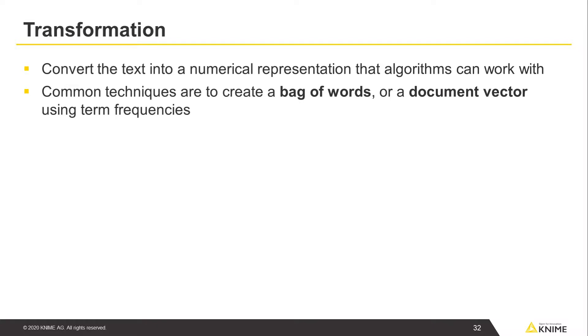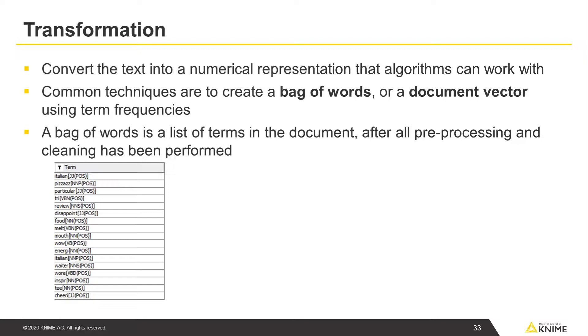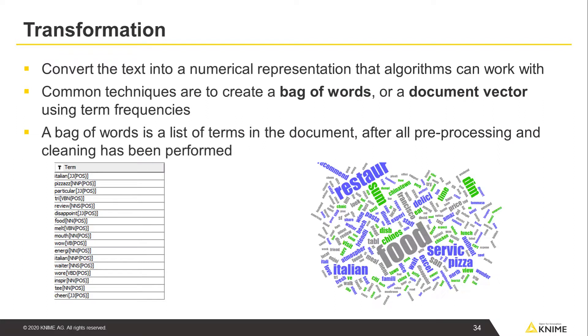Common techniques are to create a bag of words, or create a document vector using term frequencies. A bag of words for one document is simply a list of terms that are in the document after all pre-processing and cleaning has been performed. With a bag of words representation, you lose some information in your text, like word order, but you can still calculate term frequencies. Based on these frequency values, you could, for example, create a word cloud of relevant terms using the frequency for the font size to visually represent which terms are more common.